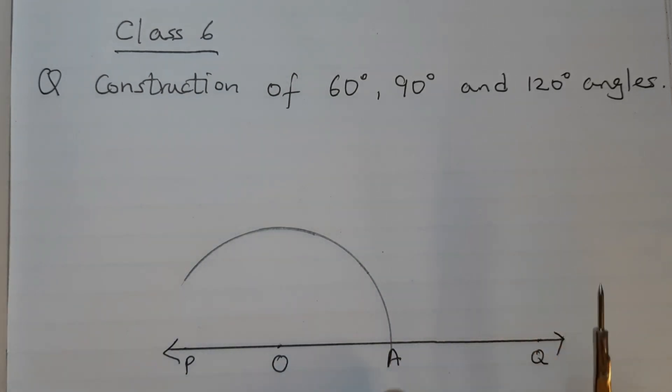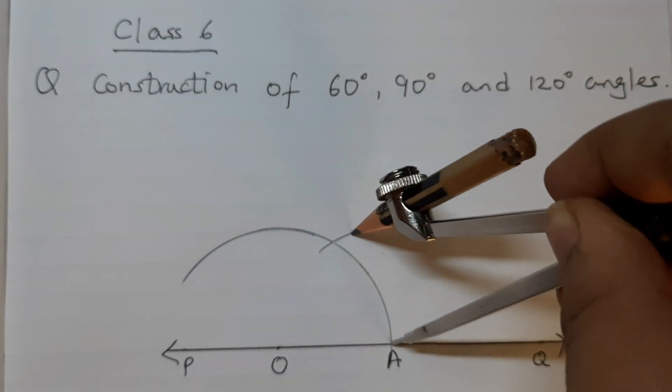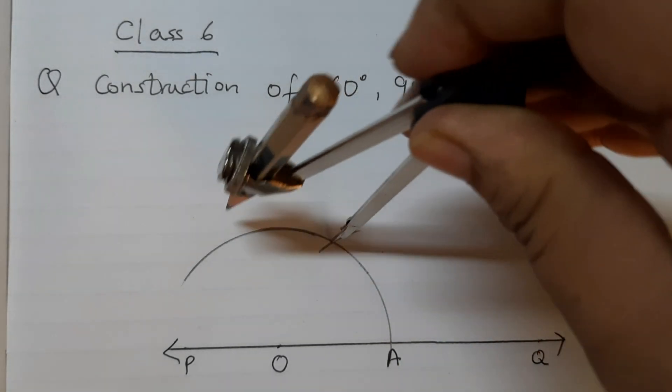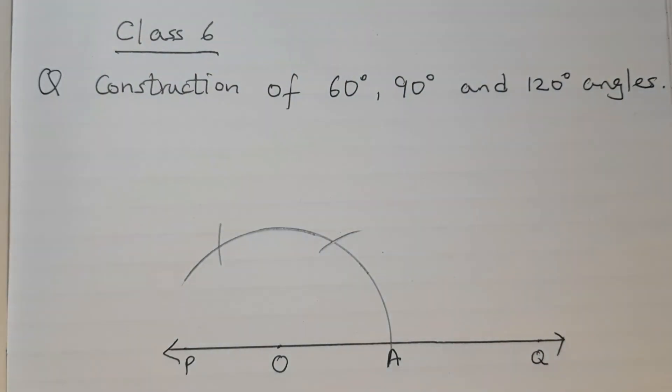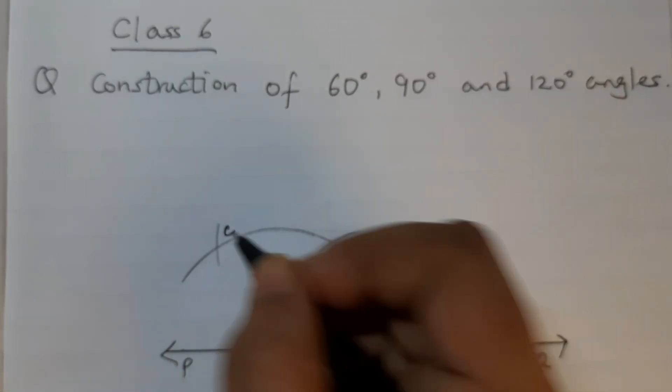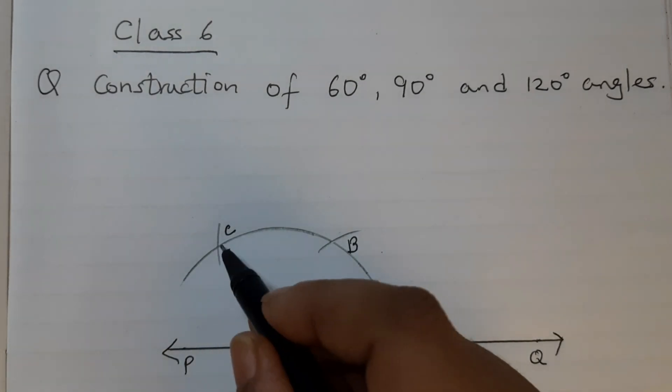Draw an arc with the pointer at A and then the same radius, one more arc. So this is say B and this is C. Join O, B and O, C.